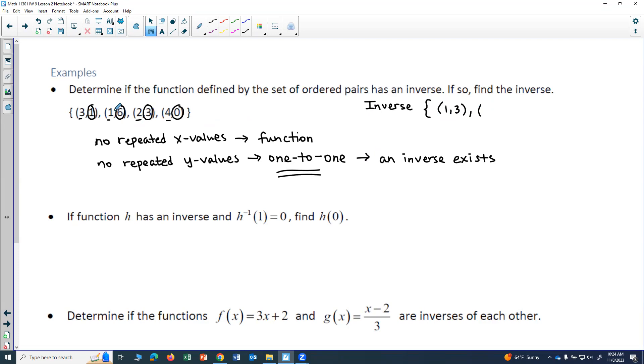In my original function, I have the point (1,6), so that would switch to the point (6,1). The point (2,3) would switch to the point (3,2), and the point (4,0) would switch to the point (0,4).